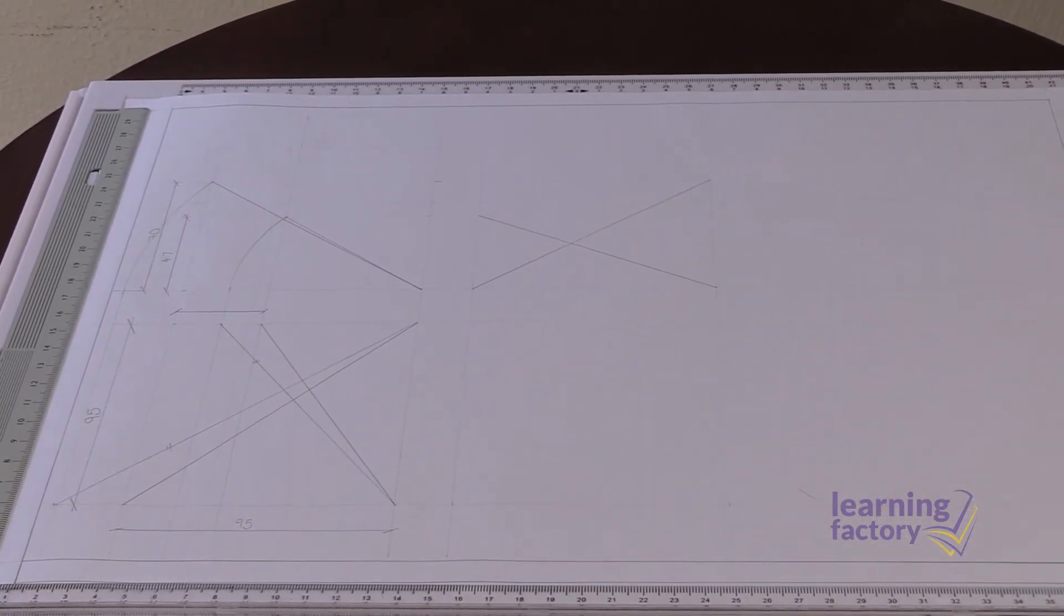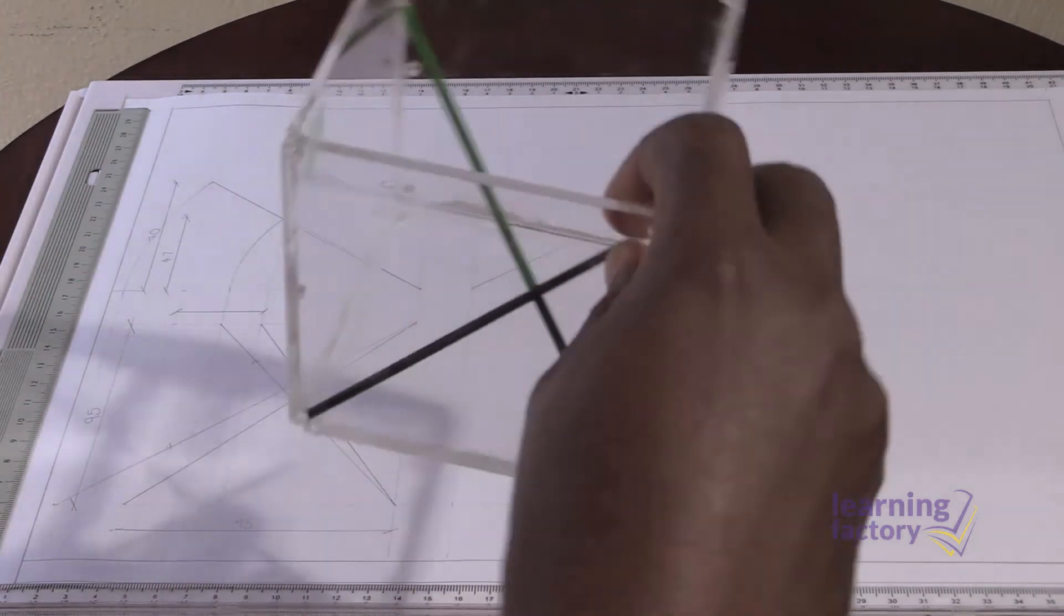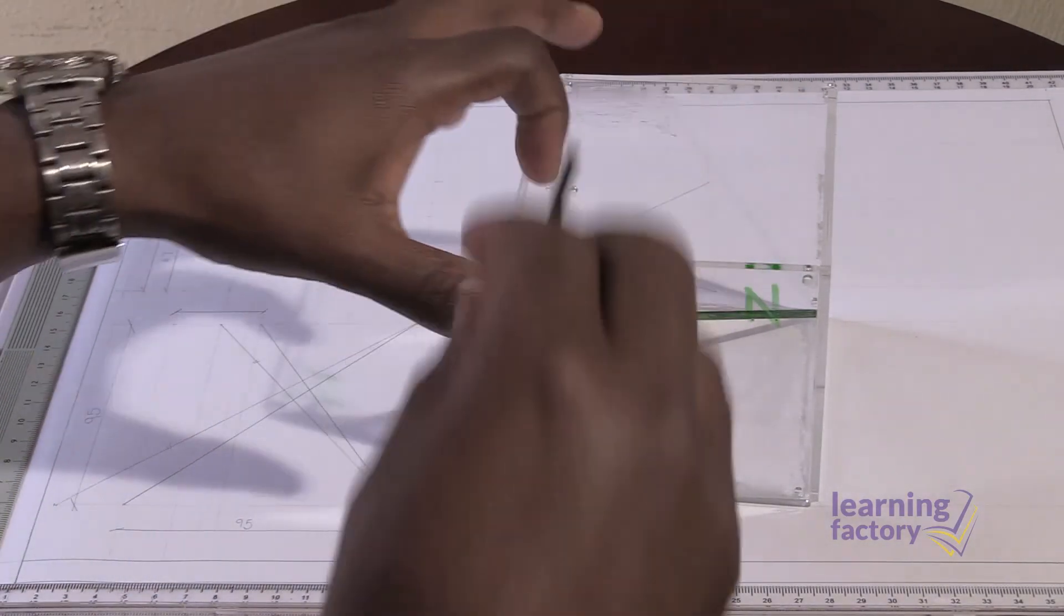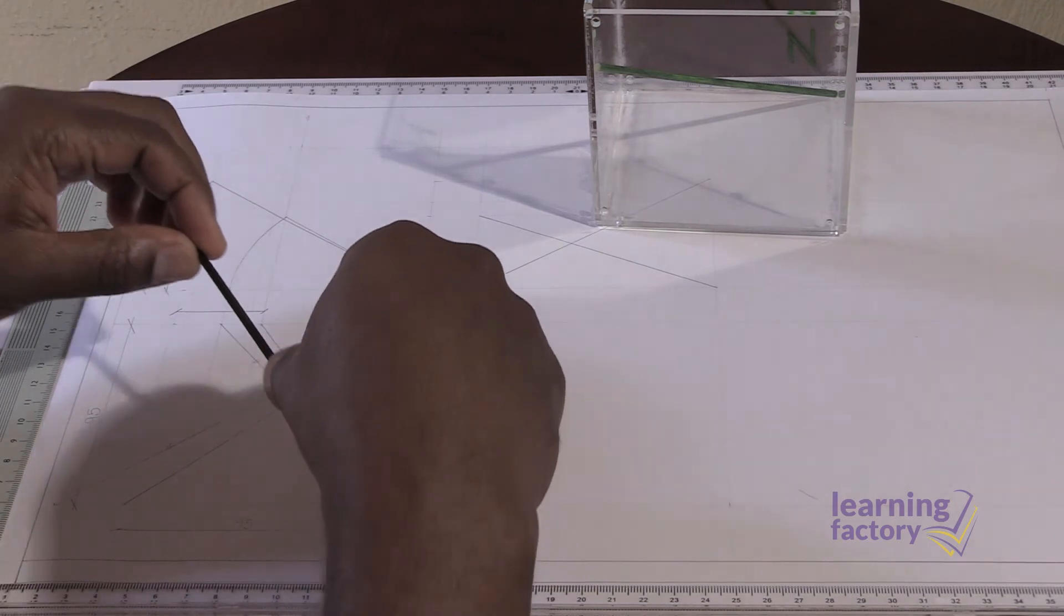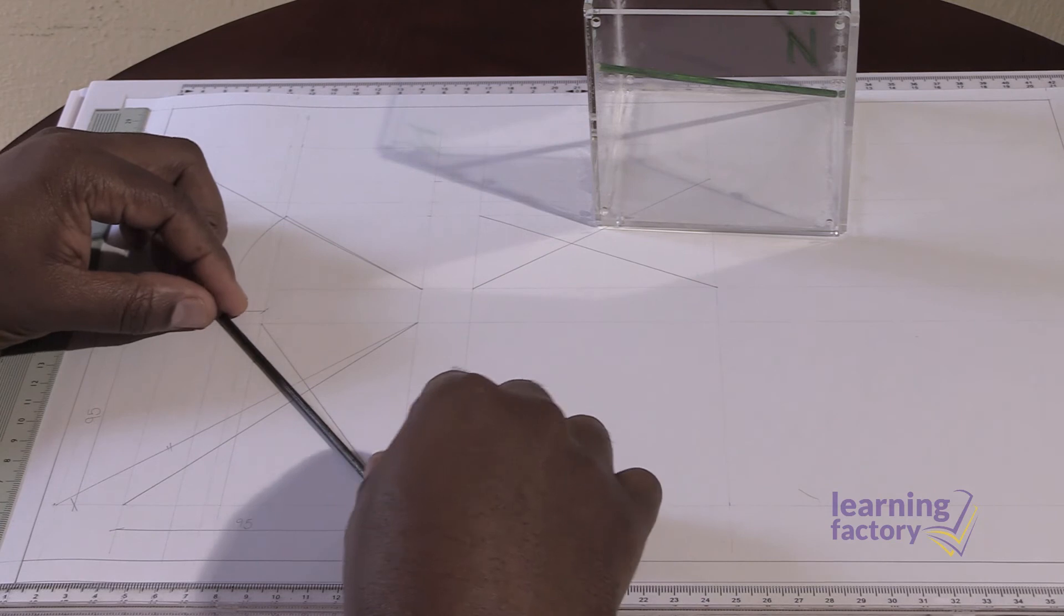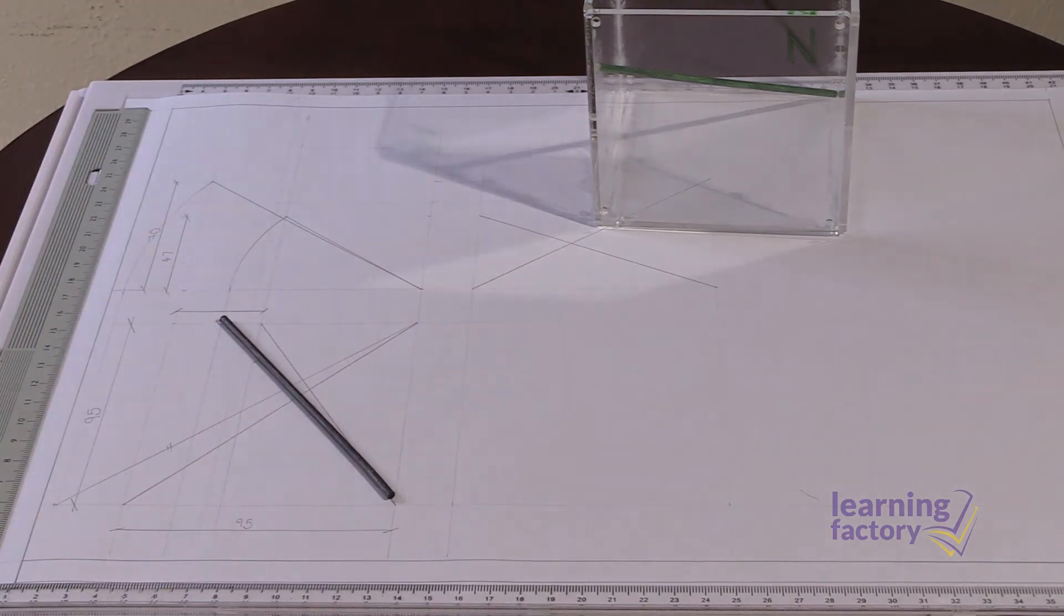So to verify that what we have done is actually correct, we're going to take the black and the green sticks out of the box and put them onto our true length drawing. So we'll start with the black stick, and we'll place it over our true length. And you can see that indeed, that is the correct true length.